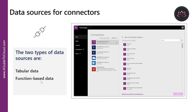A function-based data source uses functions to interact with the data source. These functions can return a table of data but offer more extensive actions such as the ability to send an email, update permissions, or create a calendar event. Examples include Office 365 users, Project Online, and Azure Blob Storage. Both data source types are commonly used to bring data and additional functionality to your solutions.